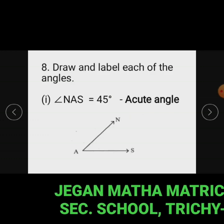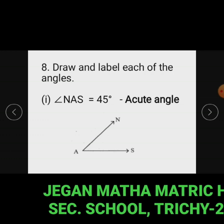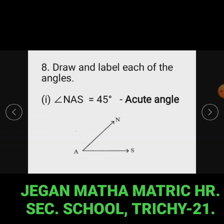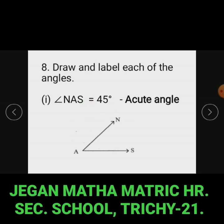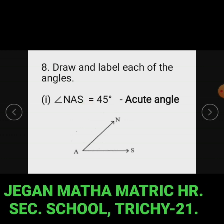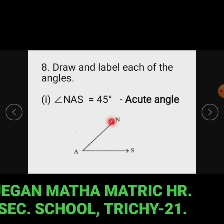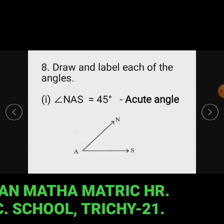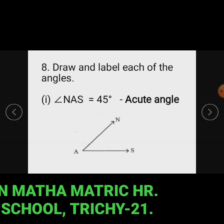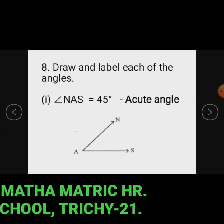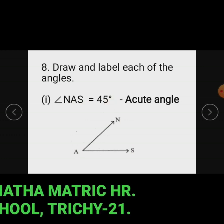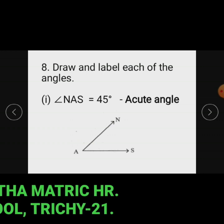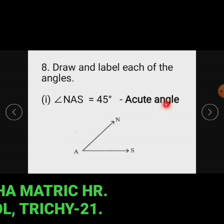Question number 8: Draw and label each of the angles. Subdivision 1: Angle NAS. Now we draw angle NAS equal to 45 degrees. The given angle 45 degrees is less than 90 degrees, so it is called an acute angle.